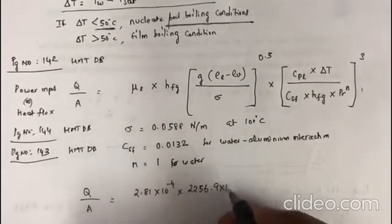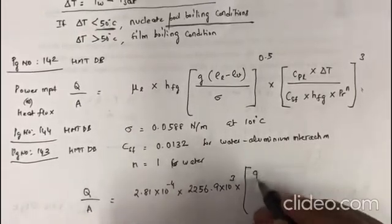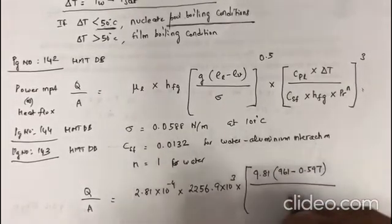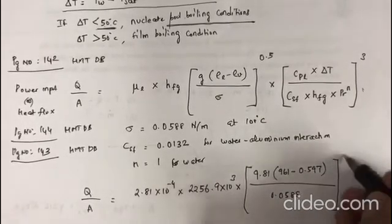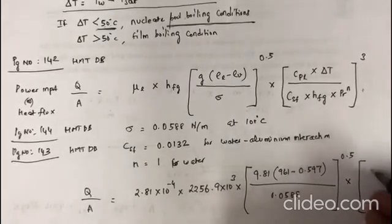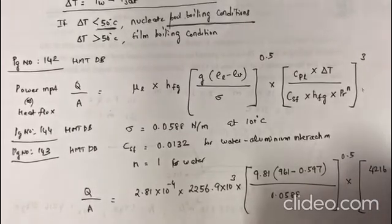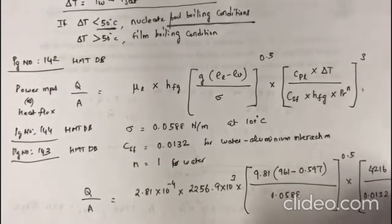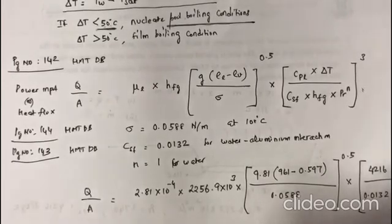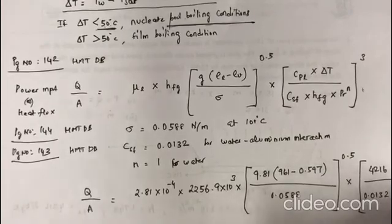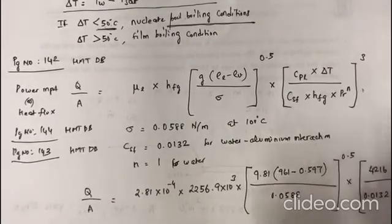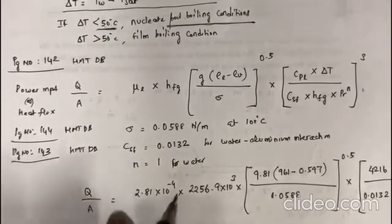So Q/A = 2.81 × 10⁻⁴ × 2256.9 × 10³ × [9.81(961 - 0.597)/0.0588]^0.5 × [Cpl × ΔT/(Csf × hfg × Pr^n)]³, where Cpl = 4216 J/kg·K, ΔT = 10, Csf = 0.0132, hfg = 2256.9 × 10³, Pr = 1.740, and n = 1. This will be raised to the power 3.